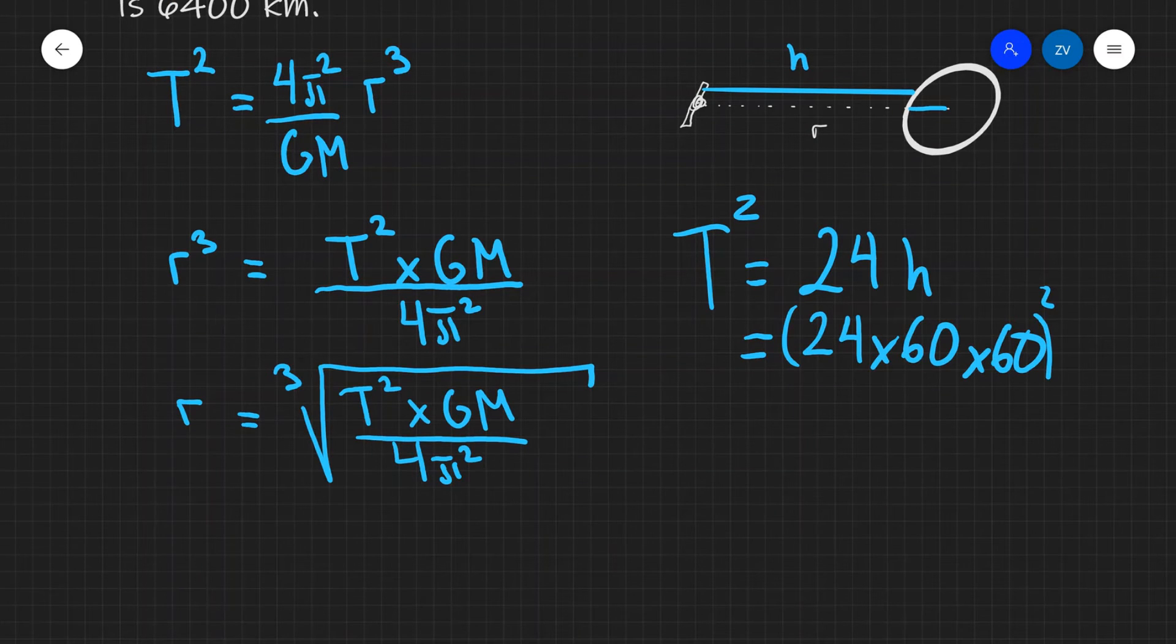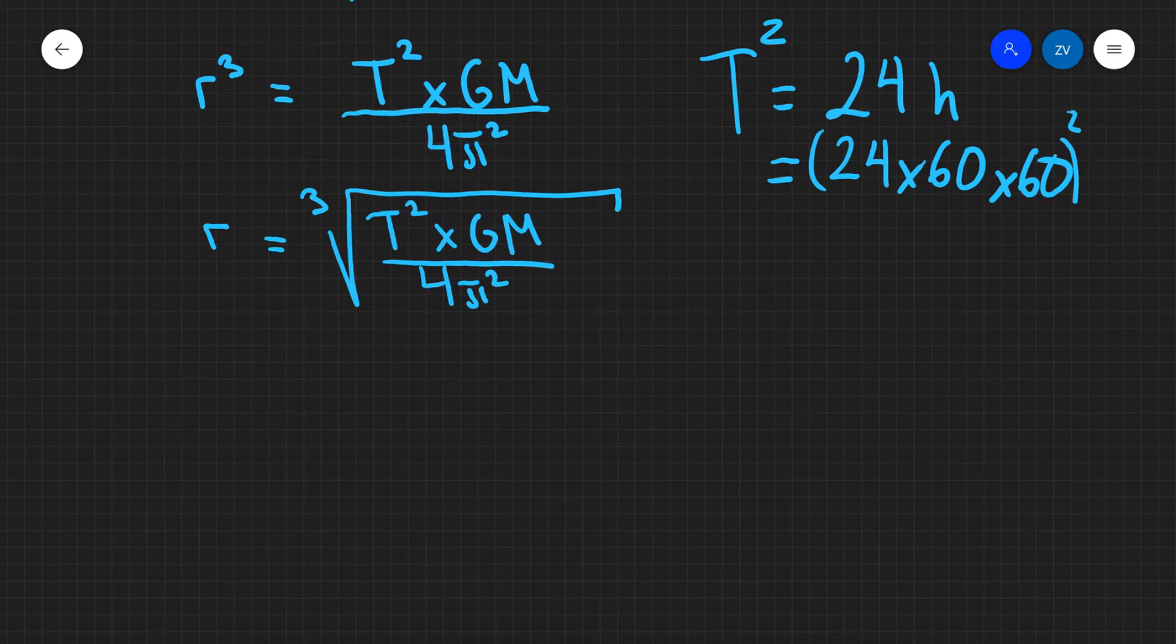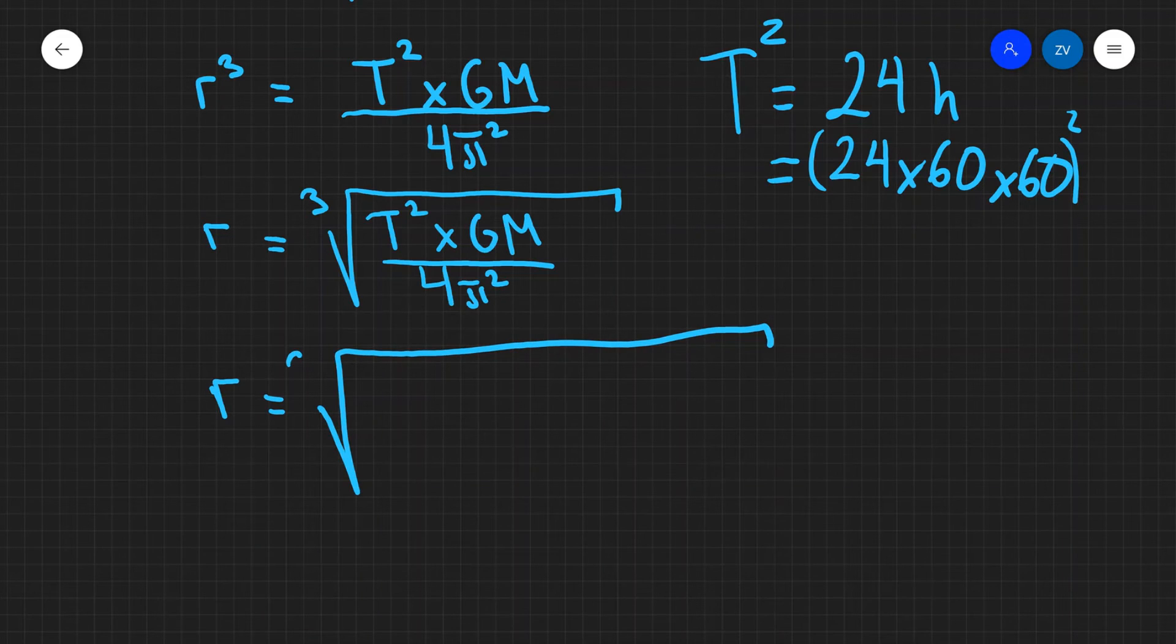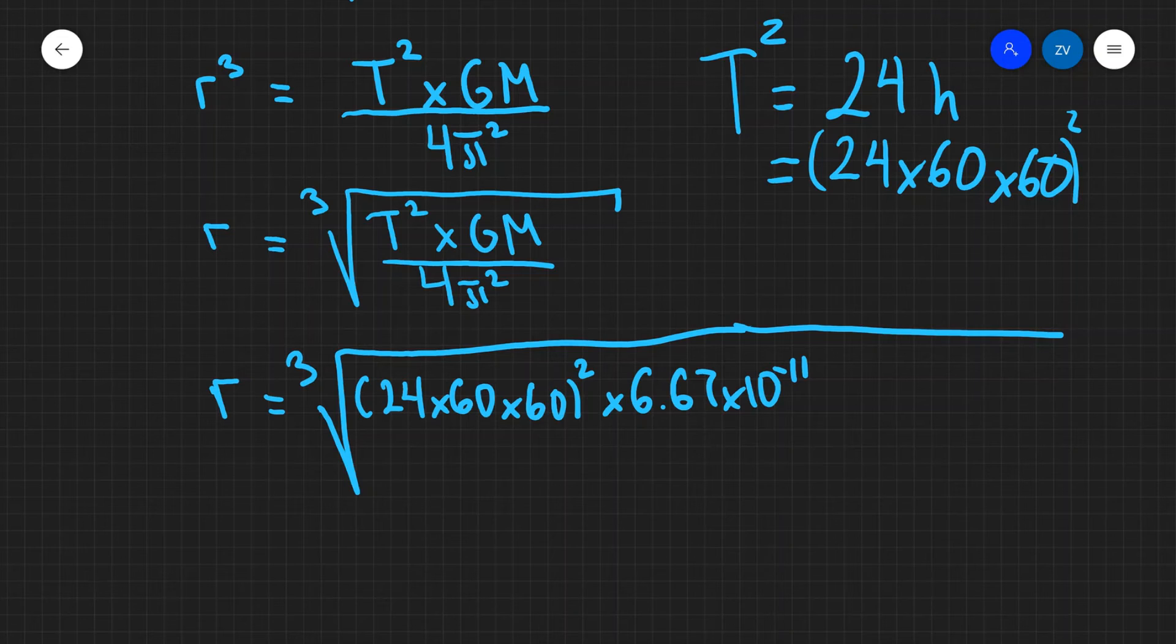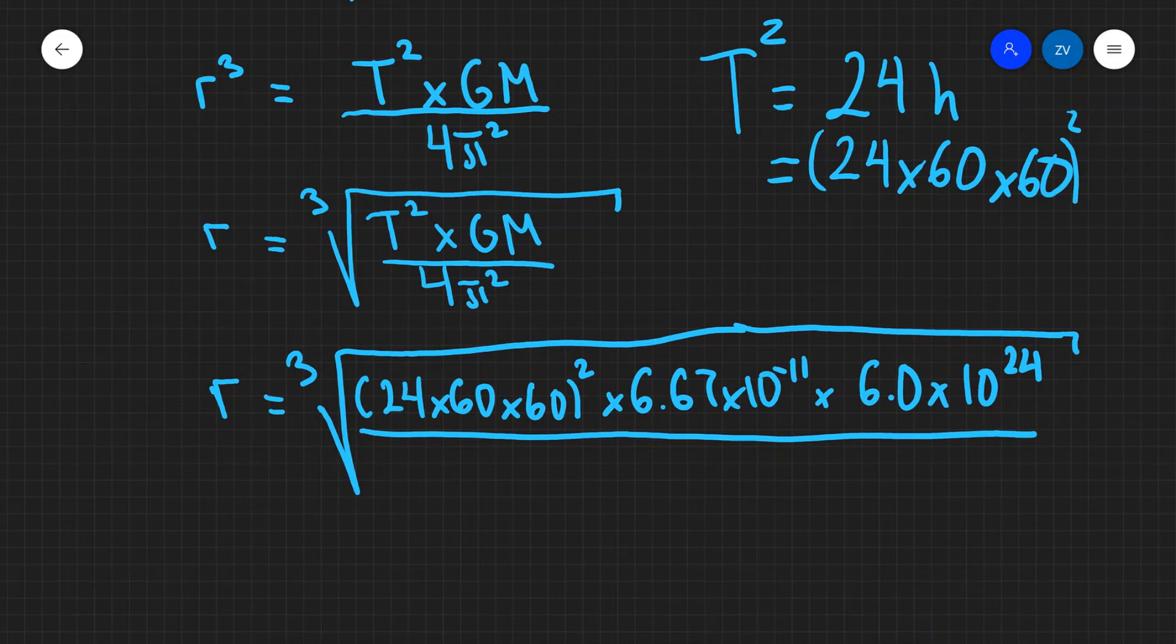Okay, let's start putting in some numbers into our formula for r. And we're going to get that r is going to equal to the cube root of T². Remember the time period is just 24 times 60 times 60. Then all of this is squared. Our gravitational constant G is 6.67 times 10 to the power of minus 11. And the mass of the Earth is, we're assuming it to be 6.0 times 10 to the power of 24 kilograms.